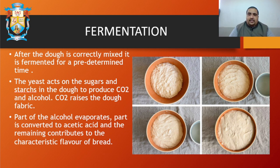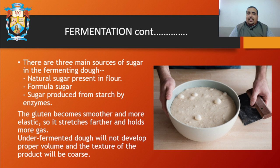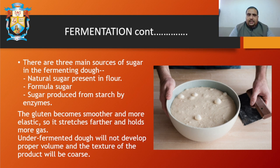During fermentation, there are three main sources of sugar: first, the natural sugar present in flour; second, formula sugar that is added; and third, sugar produced from the starch by enzymes. As gluten becomes smoother and more elastic, it stretches farther and holds more gas. Under-fermented dough is not developed properly and the texture of the product will be coarse.